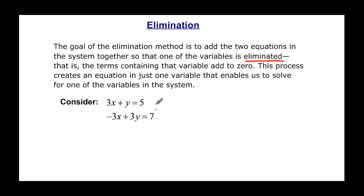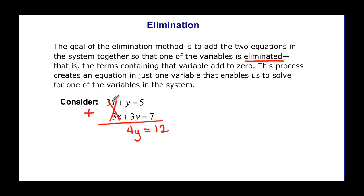If we look at this system right here, if I add these two equations, then 3x plus a negative 3x is going to be 0x, so they cancel each other out. And y plus three more y is going to give me 4y, and 5 plus 7 is going to give me 12. Now you can see that we've eliminated one variable, so we're down to a one-variable equation. If we divide by 4, we know that y is equal to 3.